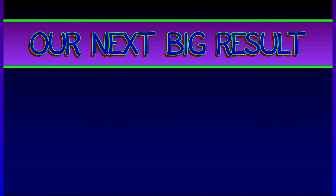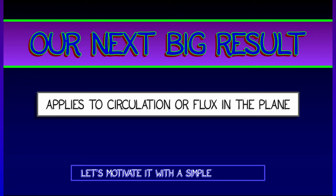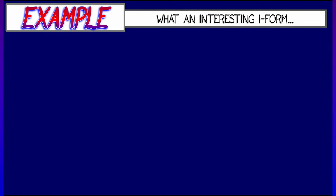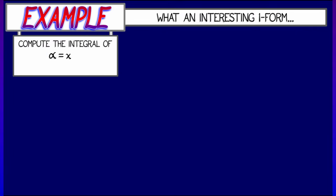Our next big result is going to apply to circulation or flux along a closed curve in the plane. Let's motivate this deep theorem with a simple example or two. Let's consider the following one form in the plane. This one form, alpha, is given by xdy.